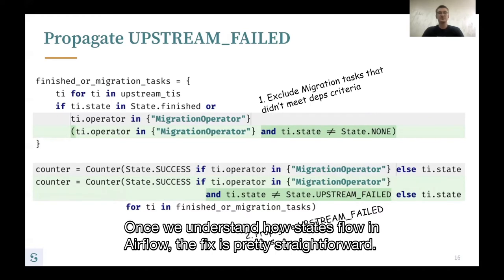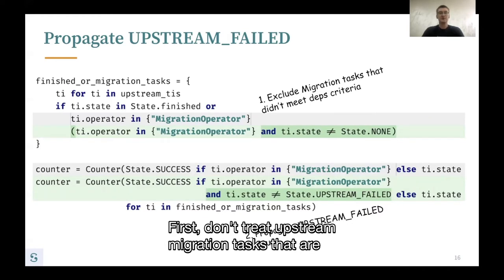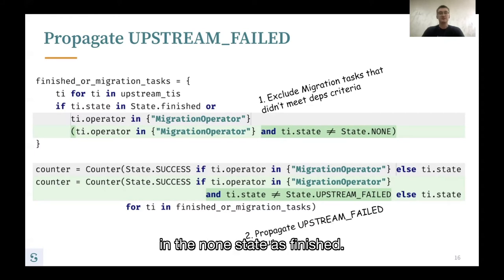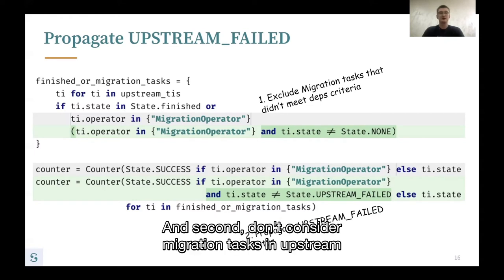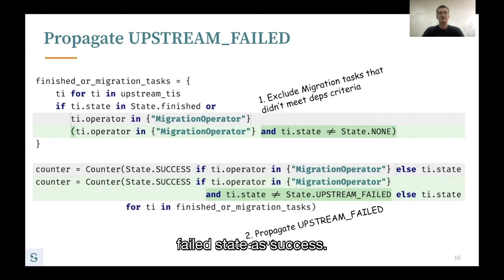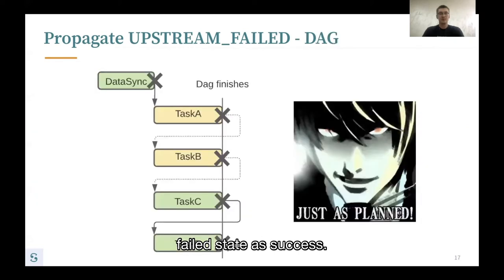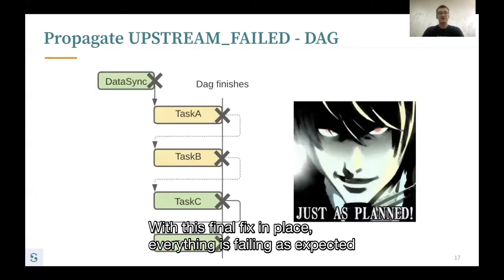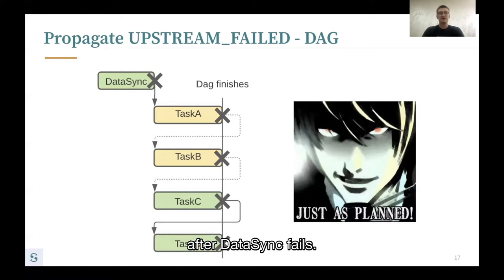Once we understand how states flow in Airflow, the fix is straightforward. First, don't treat upstream migration tasks that are in the none state as finished. Second, don't consider migration tasks in the upstream failed state as success. With this final fix in place, everything fails as expected after DataSync fails — everything falls like dominoes. Thank you for your time.